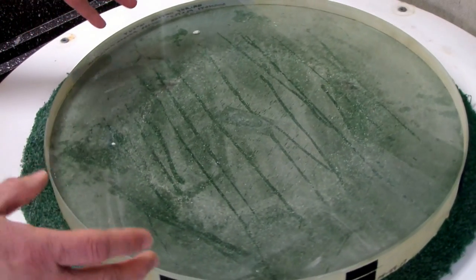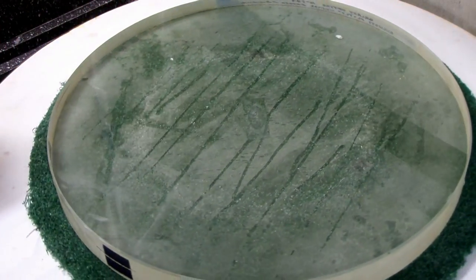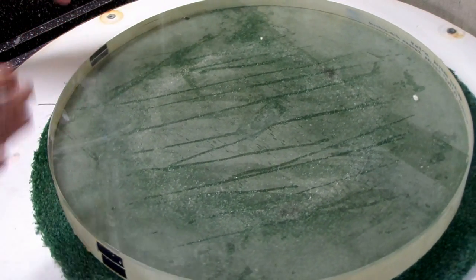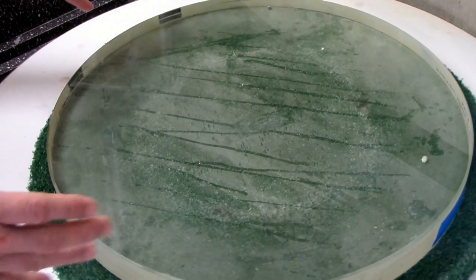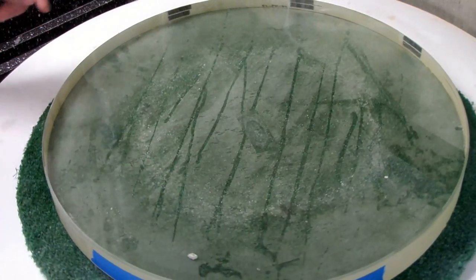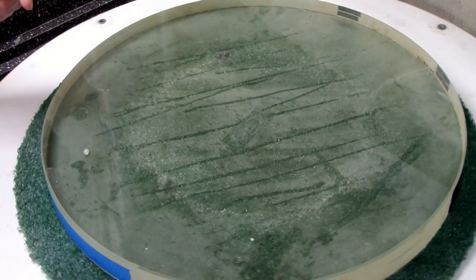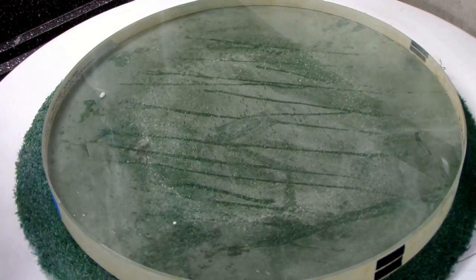During this era big mirrors got this reputation for not being good for planetary work because they wouldn't show the detail. People used them for galaxies and things like that as a light bucket, but they made the excuse that such a big mirror had too much air over it and the air currents would mess things up, and thus you were told not to use these mirrors for planetary and not to expect much in the way of detail.